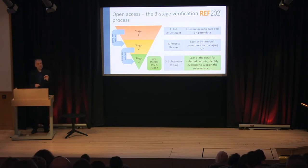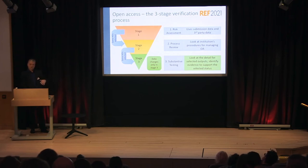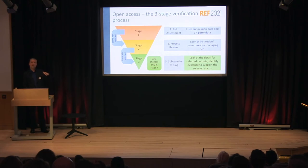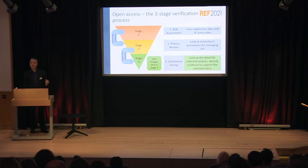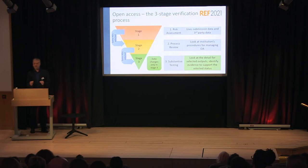I want to make sure this is very clearly understood: if we decide on the basis of Stage 1 that we are going to select you for Stage 2 for the process review, that is not an audit opinion. At that point, we have no knowledge of or basis to assume that you are any less compliant than anybody else. It simply means that your institution has been selected for the next stage in the process. Getting selected for Stage 2 is absolutely not an audit judgment or an audit opinion. That's very important.